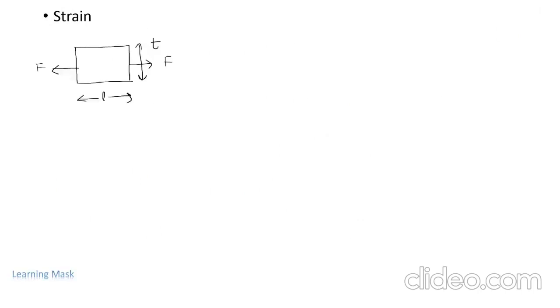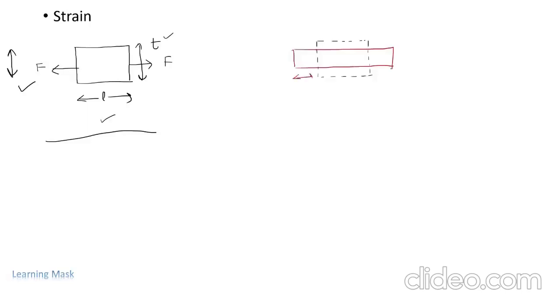Strain is defined as the ratio of change in length to initial length. Here we have a surface with force F applied; L is our length and T is our width. When we apply this force it will elongate the surface, but it will decrease T — our width. So delta L is our increase in length and delta T is the decreased width on both sides.